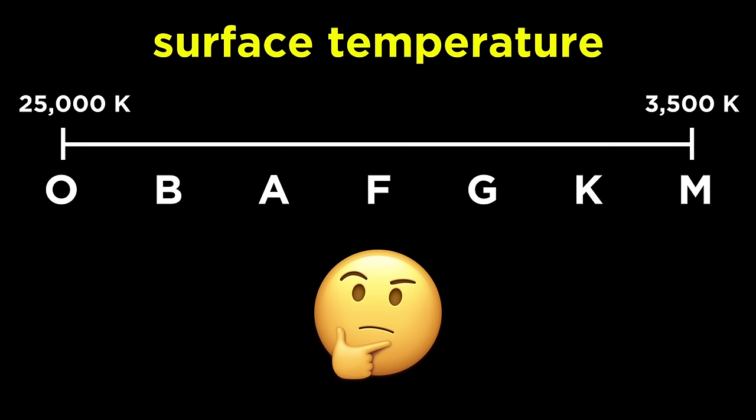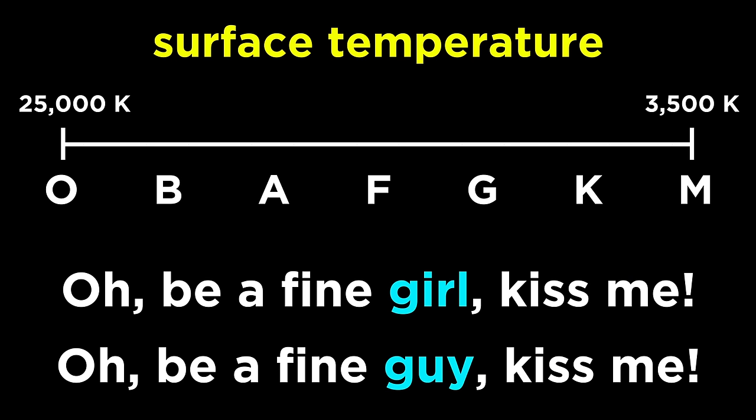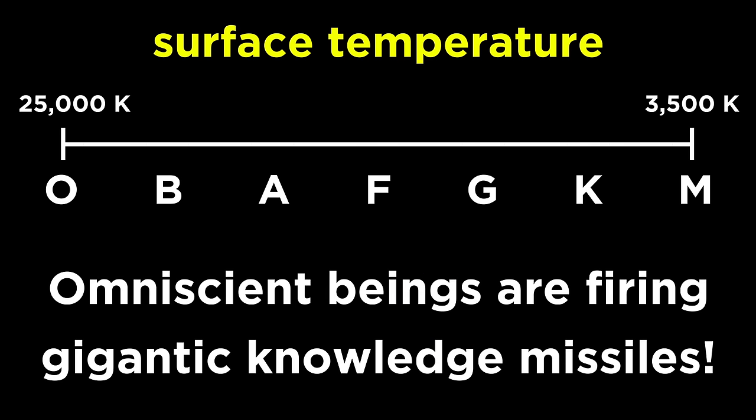This sequence of letters is rather unintuitive, but to remember the order, we can use the following mnemonic: oh be a fine girl, kiss me. Feel free to replace girl with guy, depending on your persuasion. Or if you find the whole thing terribly sexist, just make up your own, such as, omniscient beings are firing gigantic knowledge missiles.